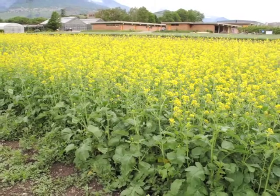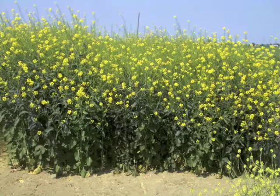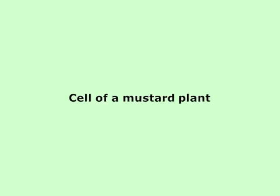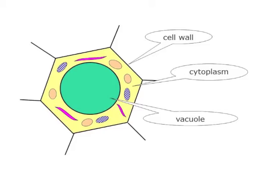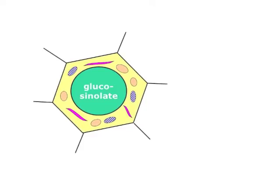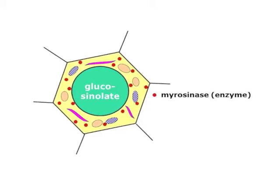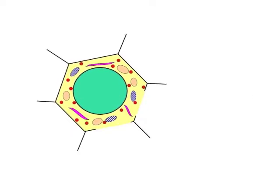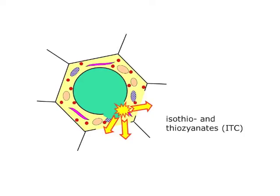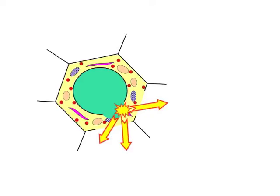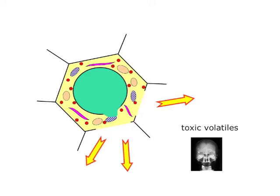For biofumigation, mainly cruciferous plants are used — in first line, different mustard species. Cells of mustard plants contain glucosinolates in their vacuole and myrosinase, an enzyme, in their cytoplasm. During the decomposition of a mustard cell, the glucosinolates come in contact with the myrosinase and are thereby transformed into isothiocyanates and thiocyanates, named ITCs. ITCs form a group of molecules which are volatile and toxic to most of the soil-borne pathogens.